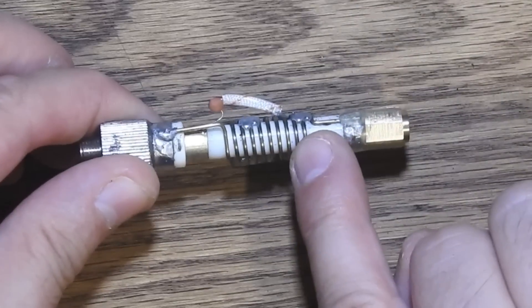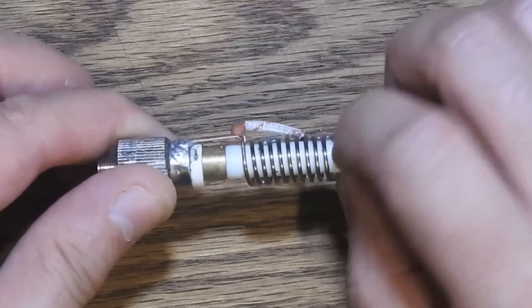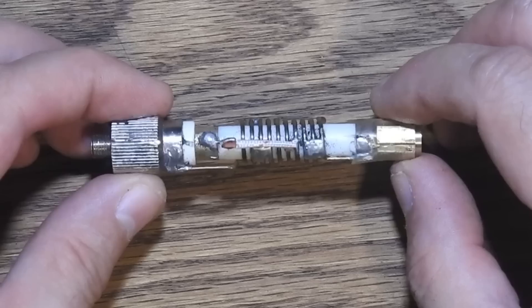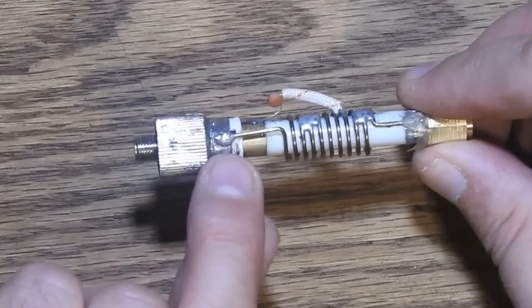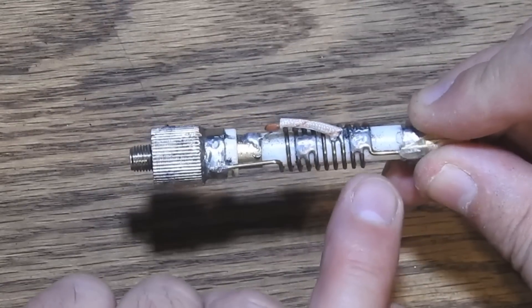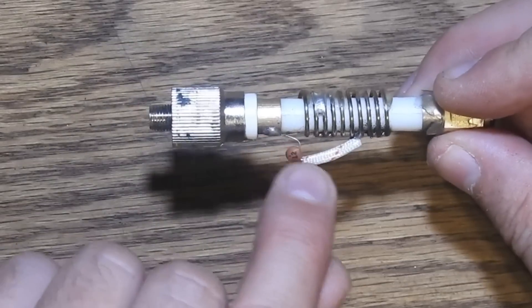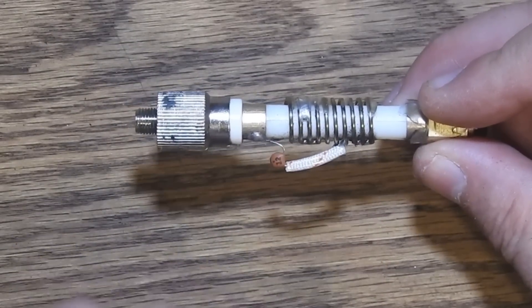This is 10 turns on an 8 millimeter diameter plastic form. The coil starts at the shield. Several groups of turns are shorted. And we have a 12 picofarad capacitor that comes up and taps into the coil.